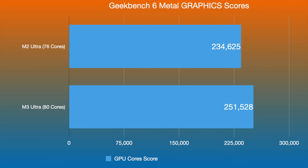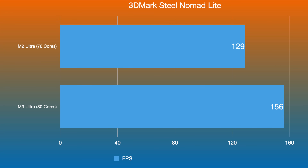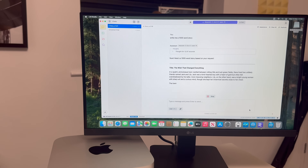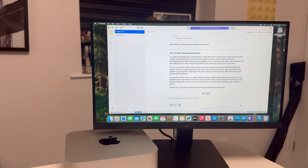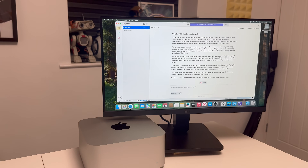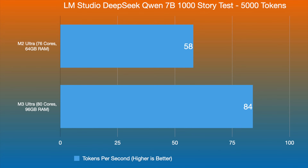The M2 Ultra is still absolutely fantastic — it is in no way a slow machine compared to the M3 Ultra. In 3DMark Wild Life Nomad, the average frames per second with the 76-core M2 Ultra was 129, whereas the M3 Ultra got 156 — that's with four more newer cores, so it is an improvement, but not a huge difference. In LM Studio with a DeepSeek QnA 7B model running a 1,000-word story test of 5,000 tokens, the M2 Ultra did 58 tokens per second while the M3 Ultra did 84 tokens per second — a bit more improvement, but not a huge amount.